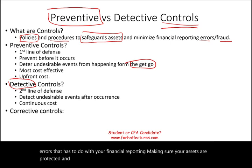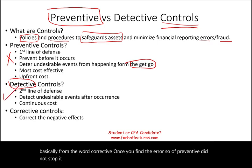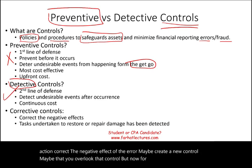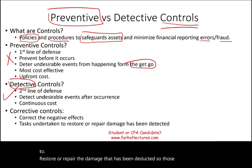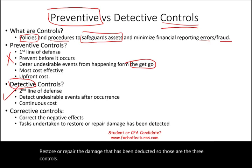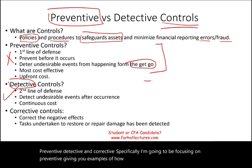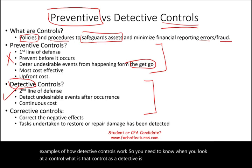The third type of control is called corrective controls. Once you find the error — preventive did not stop it, you found it in detective — now you take corrective action to correct the negative effect of the error. Maybe you create a new control, or you restore and repair the damage that has been detected. So those are the three controls: preventive, detective, and corrective. In this session I'll be focusing on giving examples of how preventive and detective controls work, so you need to know, when you look at a control, whether it is detective or preventive.